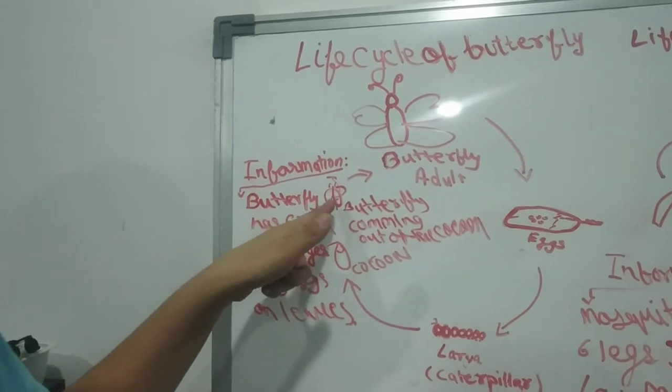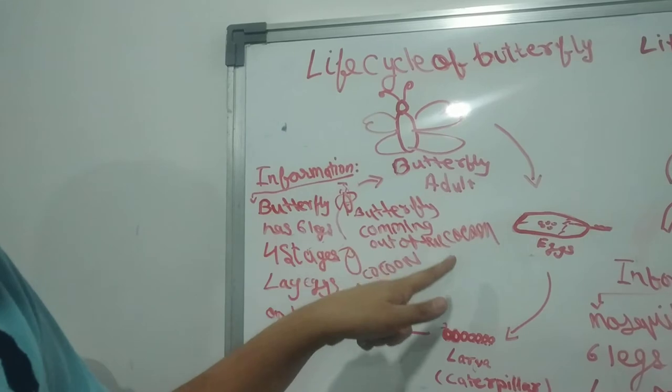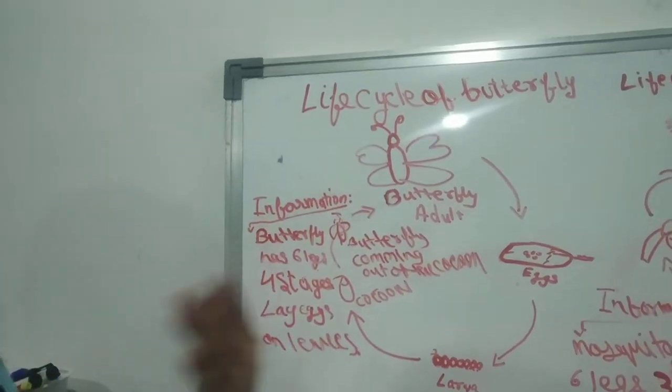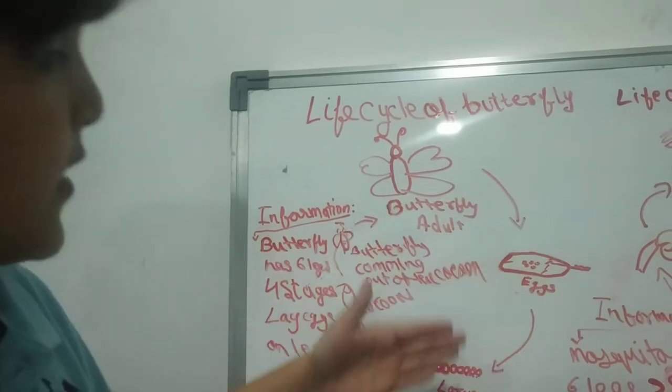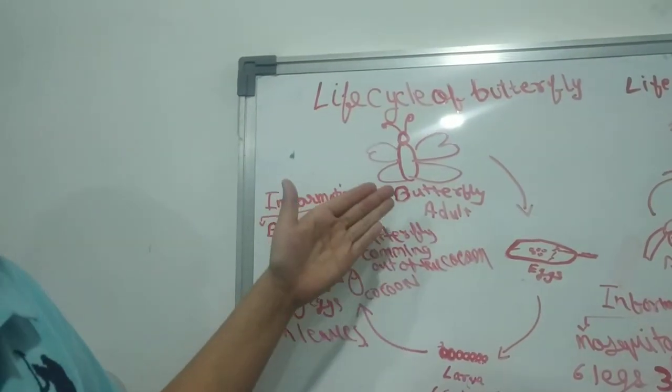Then the butterfly comes out of the cocoon, and then the eggs, then the caterpillar, then cocoon, then it comes out. So it's a life cycle.